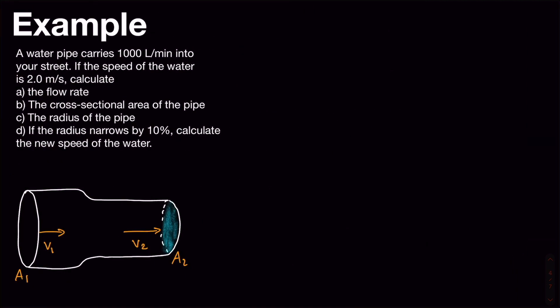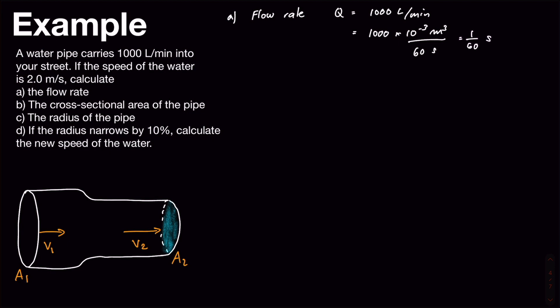Here's an example: a water pipe carries 1000 liters per minute into a street, and the speed of the water is 2 meters per second. There are several things to calculate. For part a, we need to find the flow rate. Since it's in non-SI units, we convert: 1000 liters per minute equals 1000 times 10 to the minus 3 cubic meters divided by 60 seconds, giving Q = 1/60, approximately 0.0167 cubic meters per second.